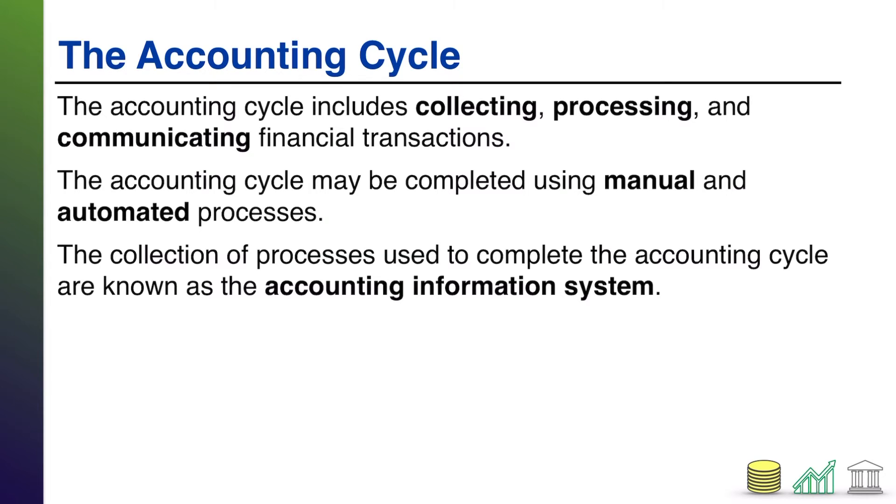The collection of processes used to complete the accounting cycle is known as the accounting information system. You will often see this abbreviated as the AIS. Whenever you see the letters AIS, that's what we're referring to. We're referring to this accounting information system, the collection of these manual and automated processes that collect, process, and communicate financial transactions.